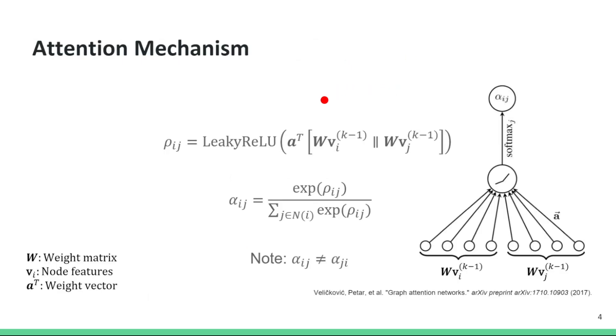Let's see how the weight alpha is computed. So for each pair of connected nodes, node i and node j, we first multiply them by the weight matrix W. Then we concatenate their features and take the dot product of these concatenated features with a weight vector a.